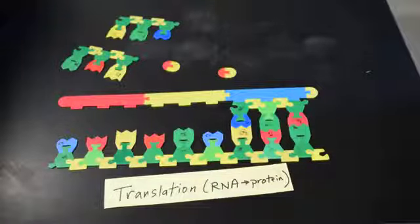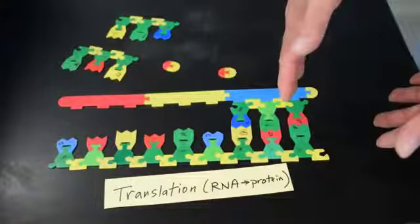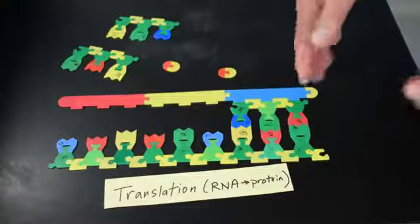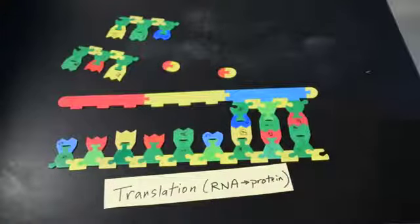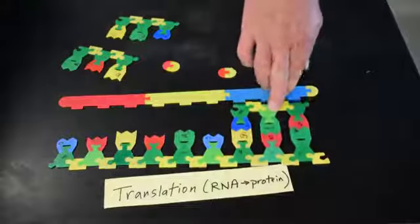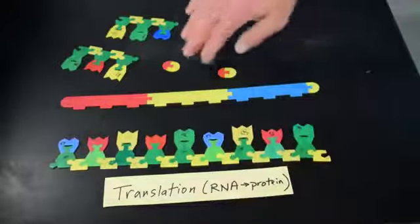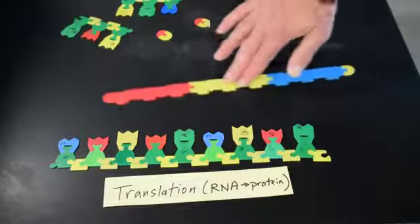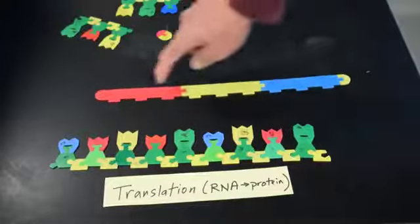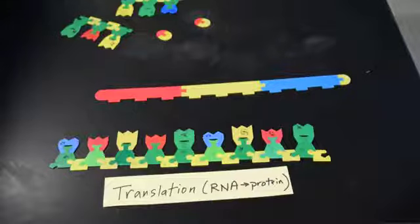At some point however the next codon over here will be a stop codon. And when a stop codon is encountered there is no tRNA that comes in. Instead there's a release factor which causes this last tRNA to break its bond with the last amino acid. So now this can go floating off.